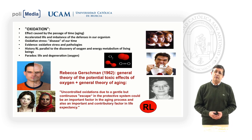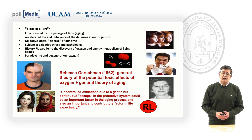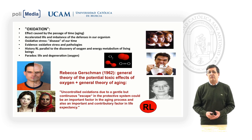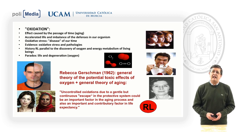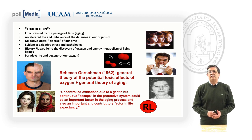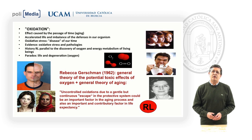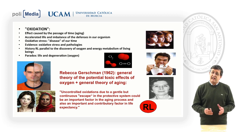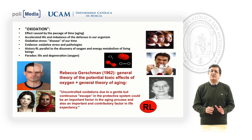The history of free radicals opened the concept of oxidative stress. Professor Rebecca Germann in 1962 developed the first general overview about what is the general theory of oxidation, and specifically related this concept with aging.